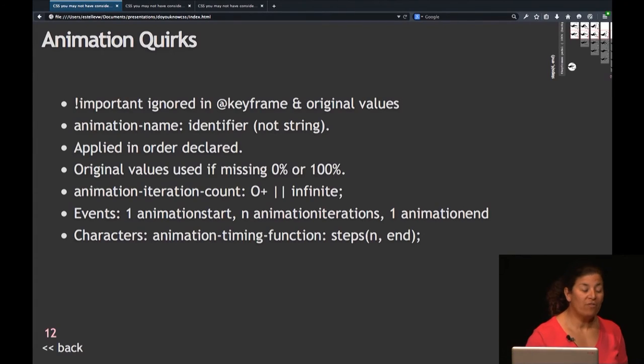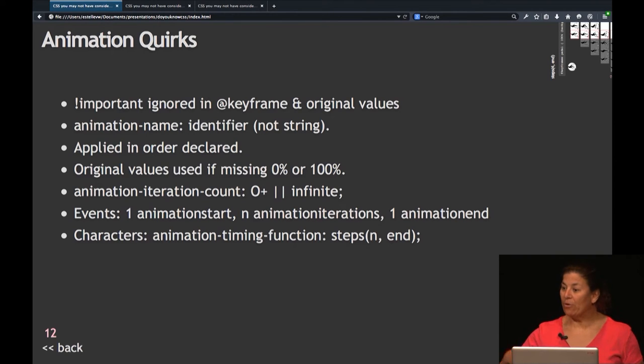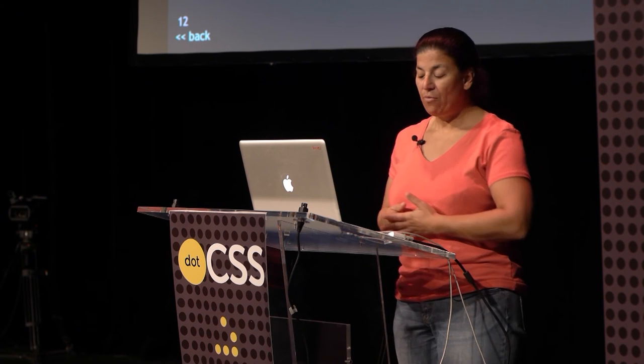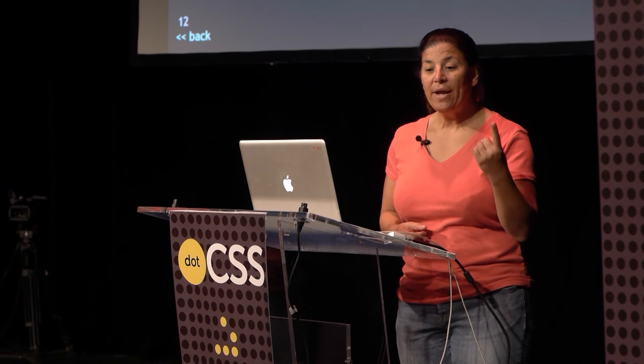If you do not have a 0% or 100% value in your keyframe animation, it will animate from 0 to 100% using the default values originally set on that property. So in the previous animation, it would have gone from white to red. Animation iteration count used to have to be integers or the word 'infinite'. The default value of iterations is 0 — it will still animate in 0 seconds and go to the 100% mark, so you can use forwards, backwards, or both. Animations throw an animation start event and an animation end event.